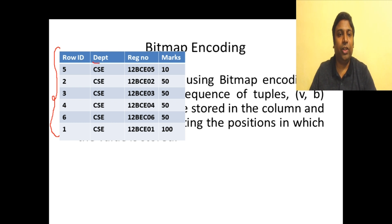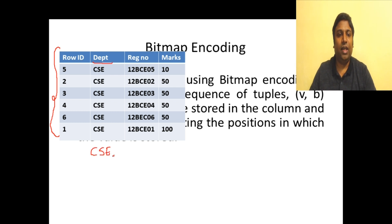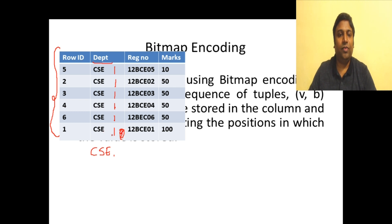Let's apply bitmap encoding to the department column. For each value, we mark a 1 where it is present and a 0 where it is absent. For 'CSE', which is present in all six locations, the encoding is: CSE, 1 1 1 1 1 1. This represents that CSE is present in all six positions of the column.